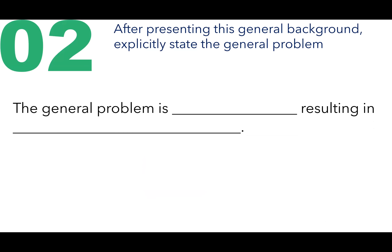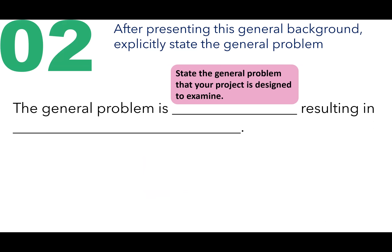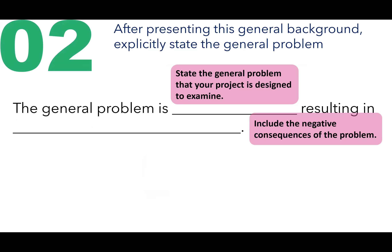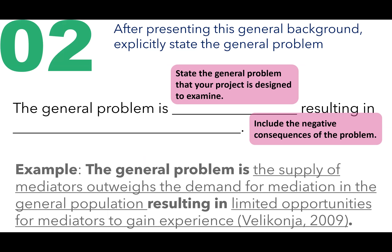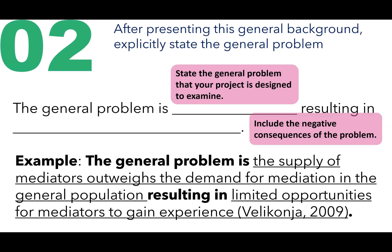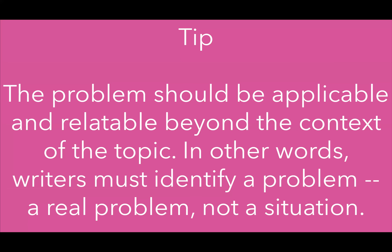Secondly, after presenting this general background, explicitly state the general problem. The general problem is — you need to fill in the blanks — resulting in [state the general problem your project is designed to examine], and in the second space, include the negative consequences of the problem. A reasonable example: the general problem is the supply of mediators outweighs the demand for mediation in the general population, resulting in limited opportunities for mediators to gain experience. You can also add a citation to the relevant research document. The tip for the second step is the problem should be applicable and relatable beyond the context of the topic — writers must identify a real problem, not a situation.